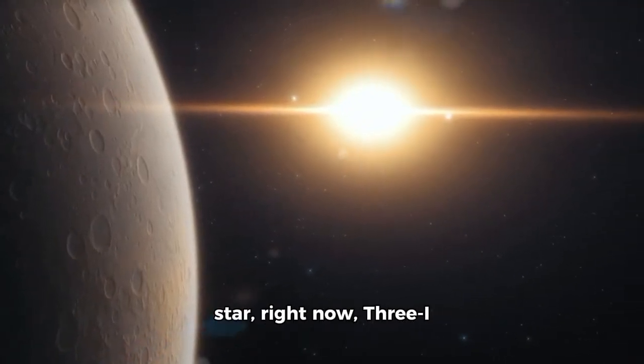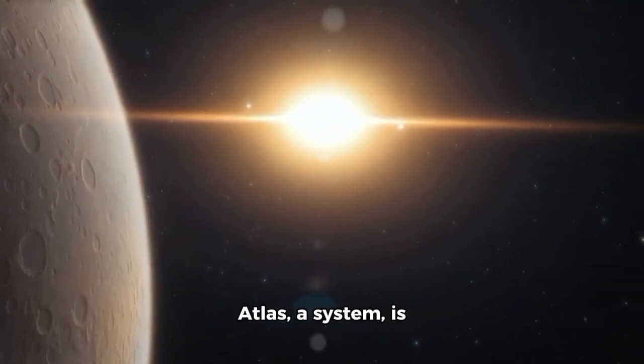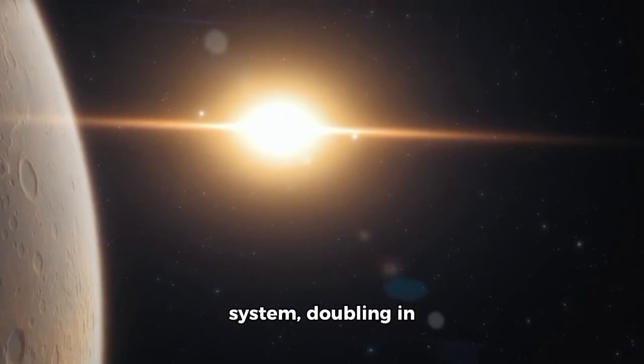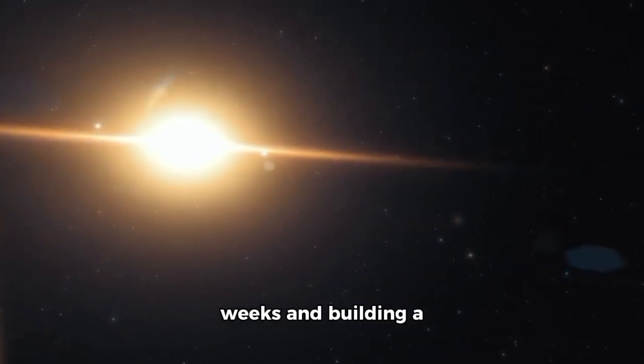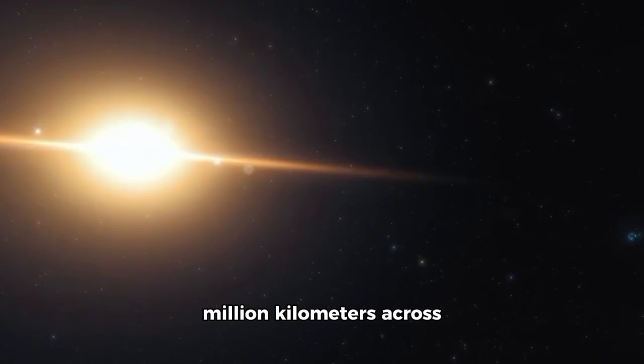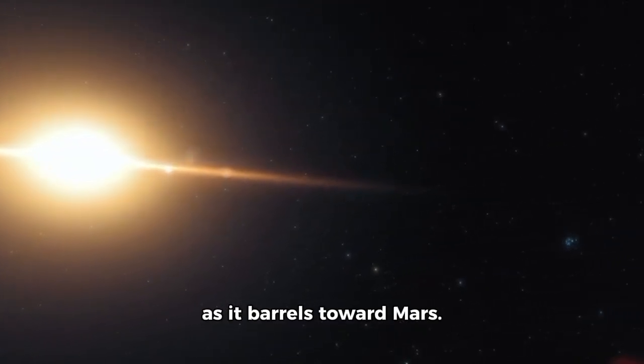An object from another star, right now, 3i Atlas, a system, is tearing through our solar system, doubling in brightness every few weeks and building a green cloud half a million kilometers across as it barrels toward Mars.